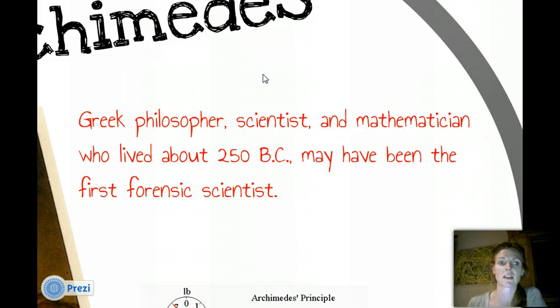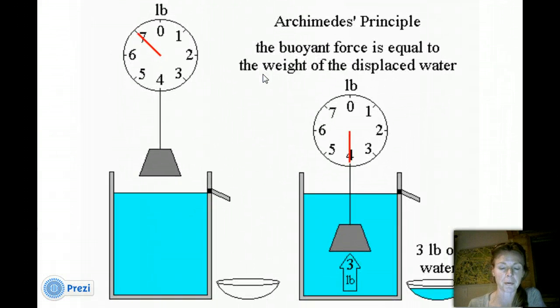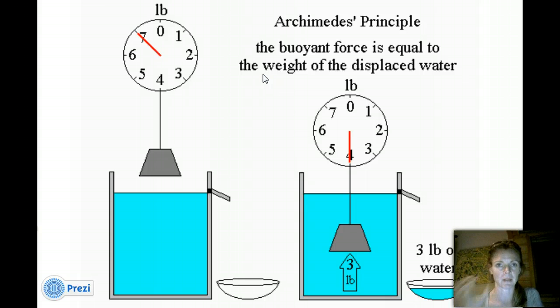Greek philosopher, scientist, mathematician, he lived about 250 BC. That's pretty freaking old. Not that he's alive anymore, but a long time ago. So, he may have been the first forensic scientist. And I think there's a story in your text that talks about the Archimedes principle. I think it had to do with something about a king that basically wanted to make sure that his crown was made fully of gold and that the person forming the crown wasn't stealing from him. I can't remember the exact details.